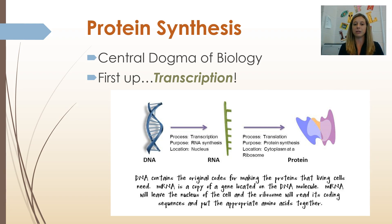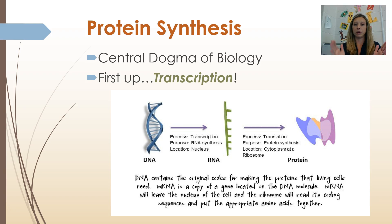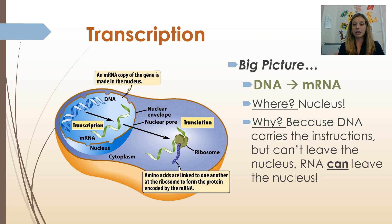Back to the central dogma: it says that we start with DNA, we use it to make RNA, RNA is read to make proteins. The first thing we have to do is start with the DNA where the recipe for a protein is and use it to make a molecule of RNA. That process is called transcription. Big picture: transcription is taking a molecule of DNA and using it to make a molecule of messenger RNA.